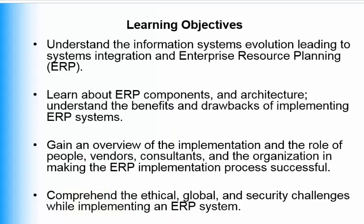The learning objectives of this chapter — what we are trying to achieve by the end of this video — is for you to understand how ERP systems evolved, what kind of systems we had before ERP systems, and what led to their introduction. We'll also talk about the components of ERP systems, the parts that make up the system, its architecture, and the benefits and drawbacks of having an ERP system within organizations.